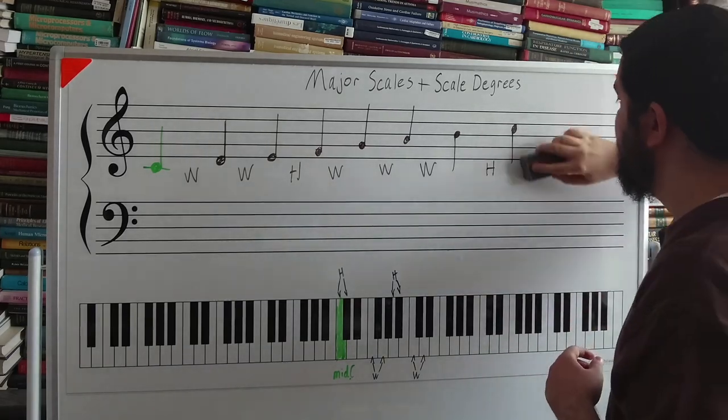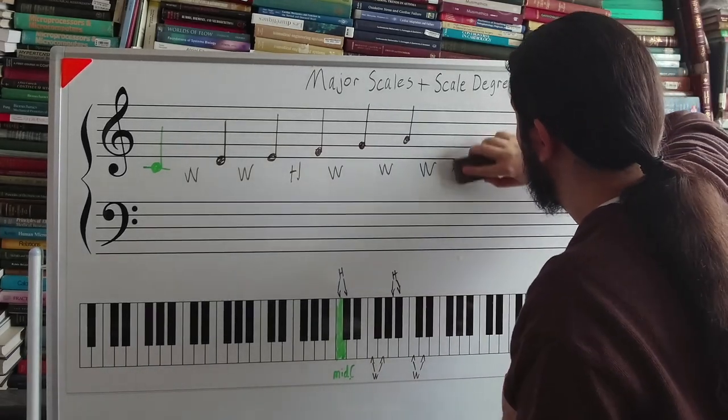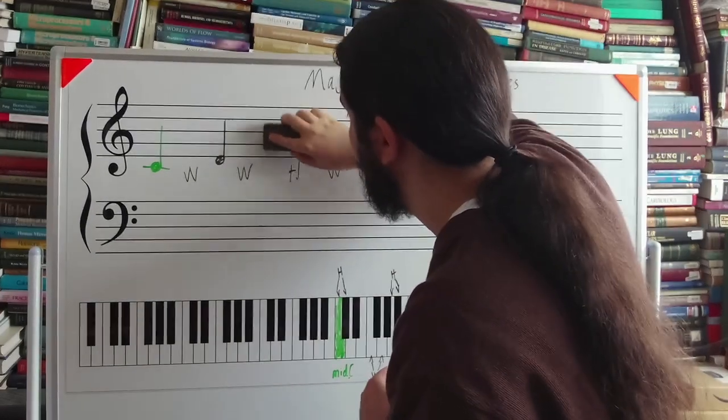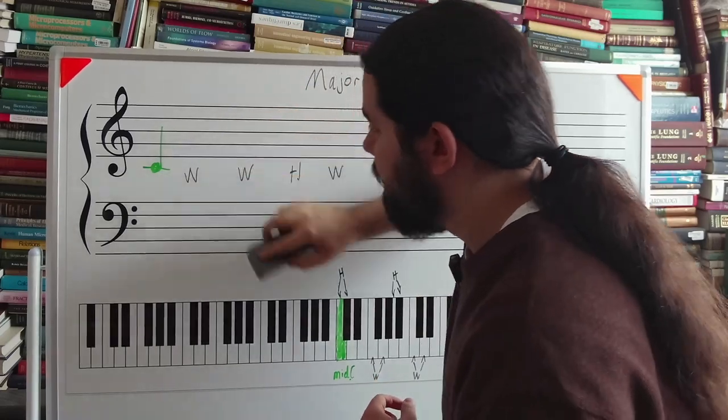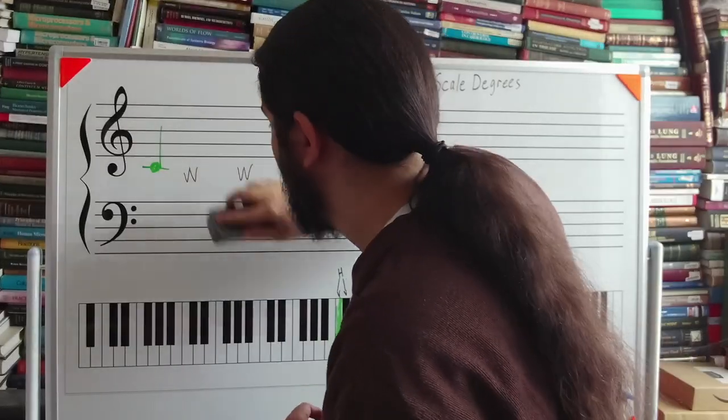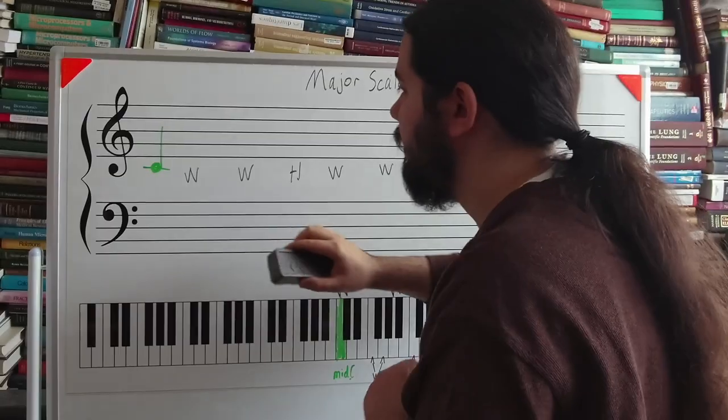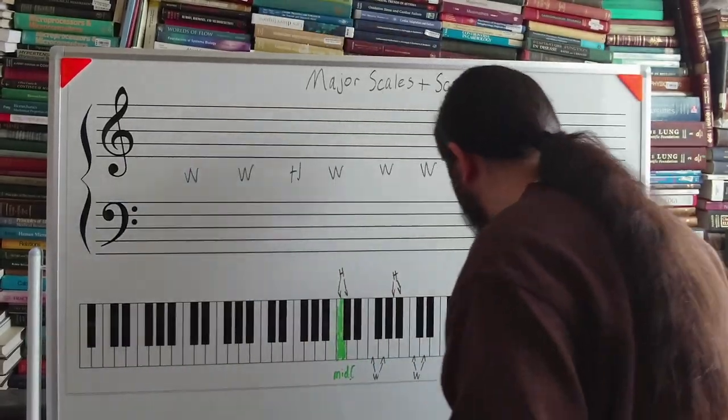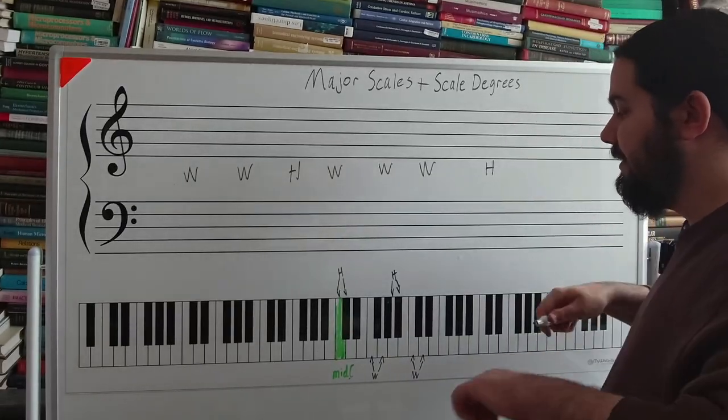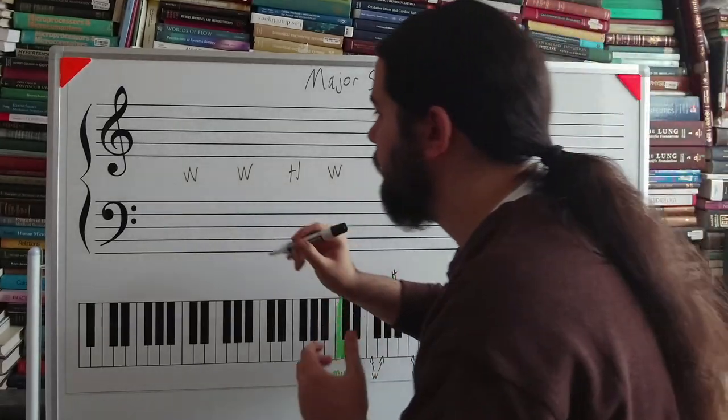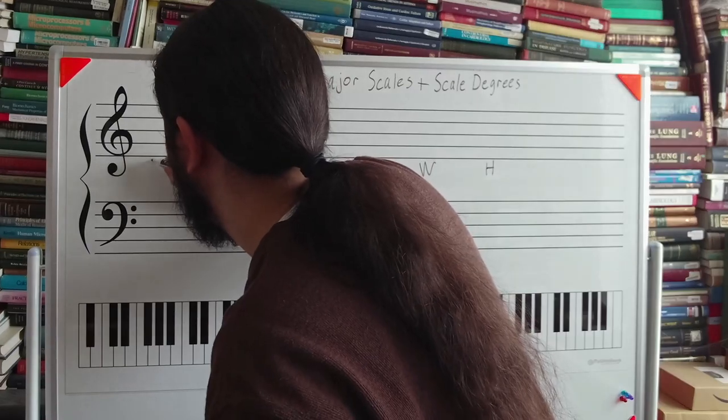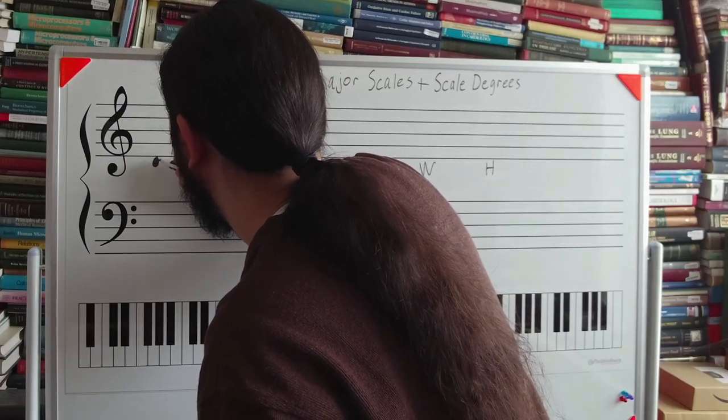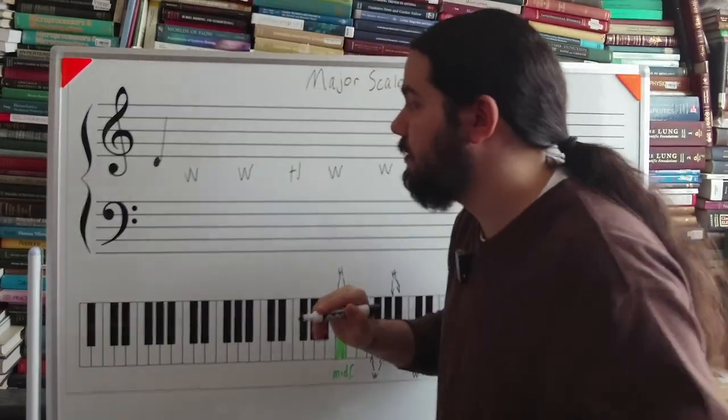And then I'm going to now build a major scale based on D. So now D is going to be our starting note. This is where some sharps will come into play, and you will see that very soon. So now let's start on D.